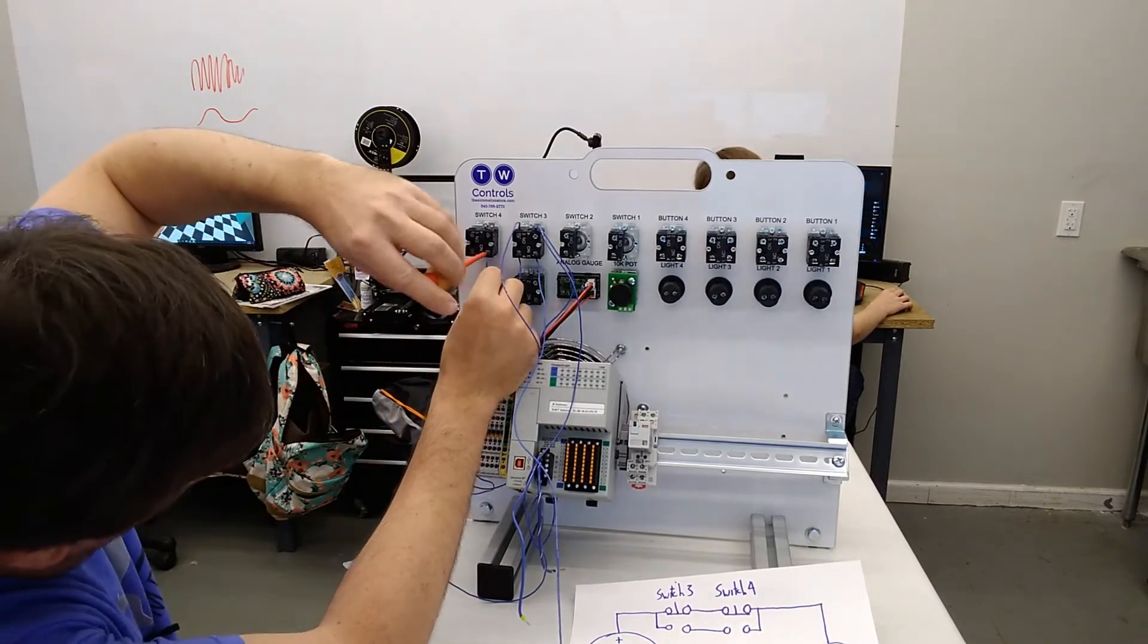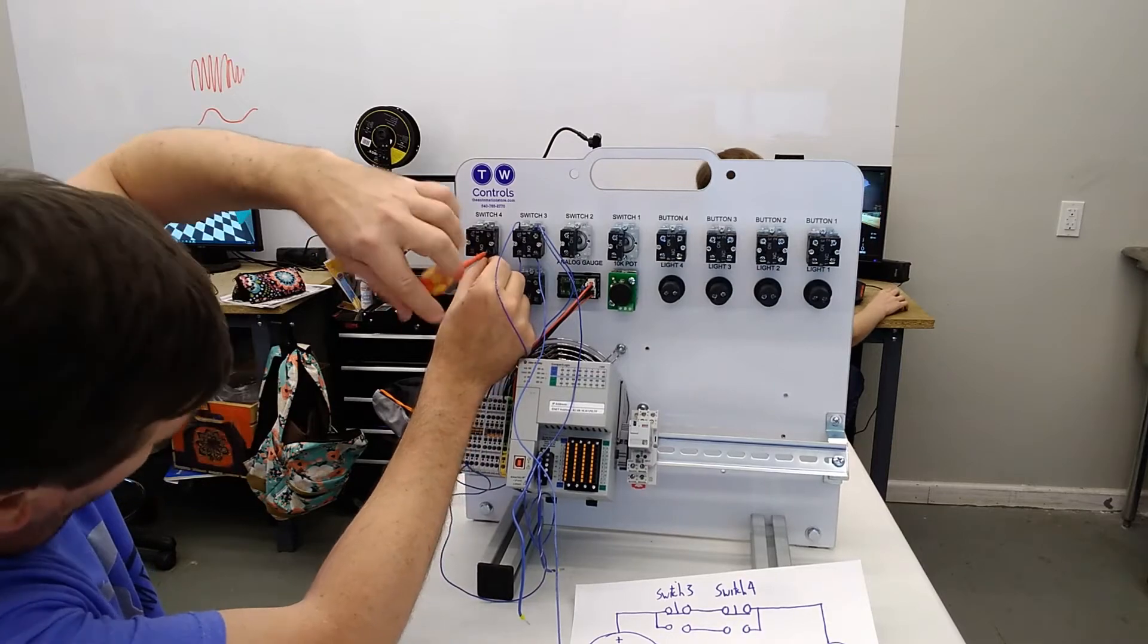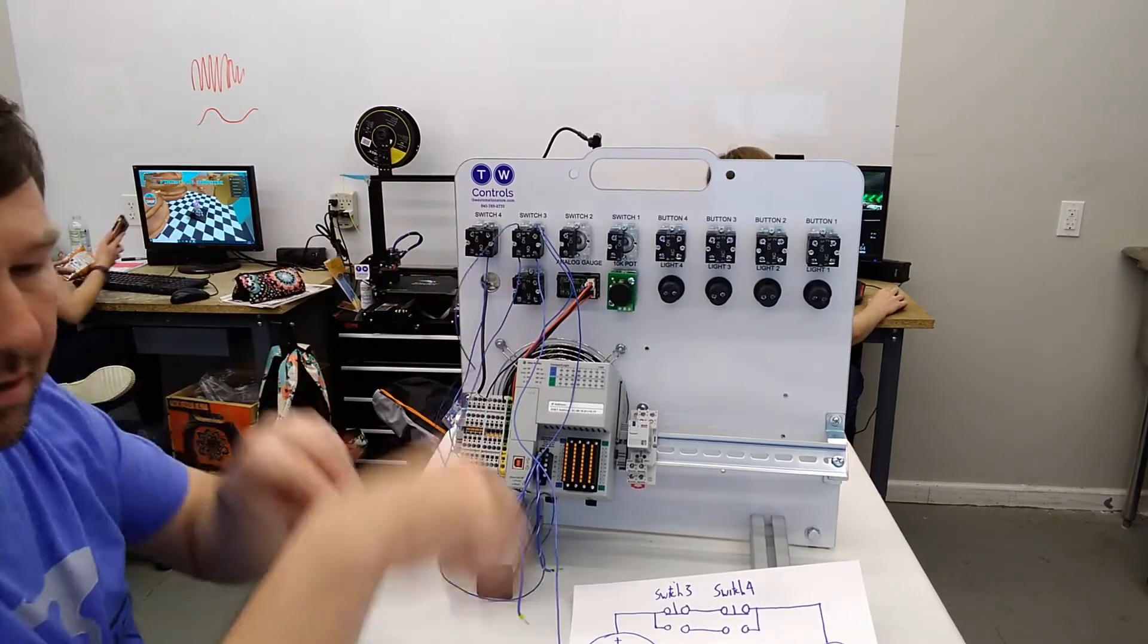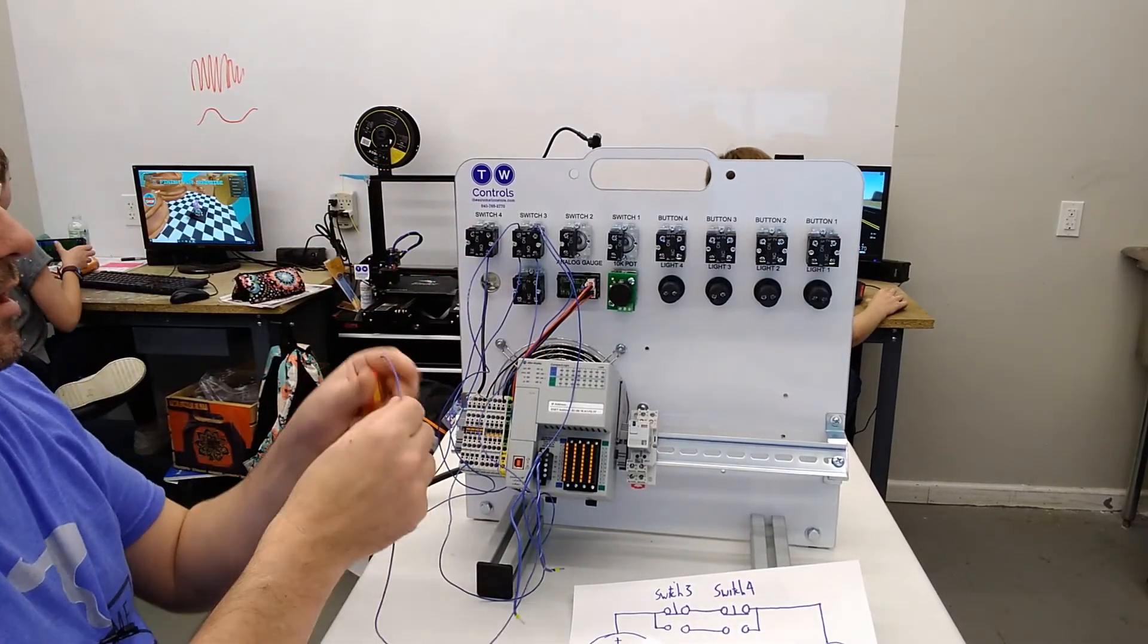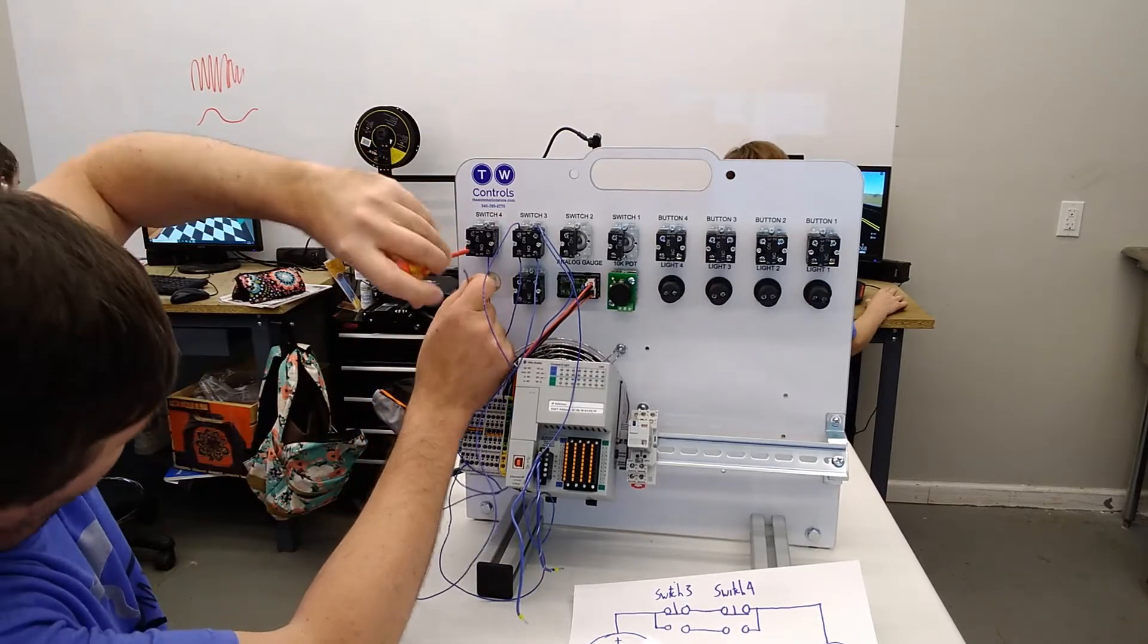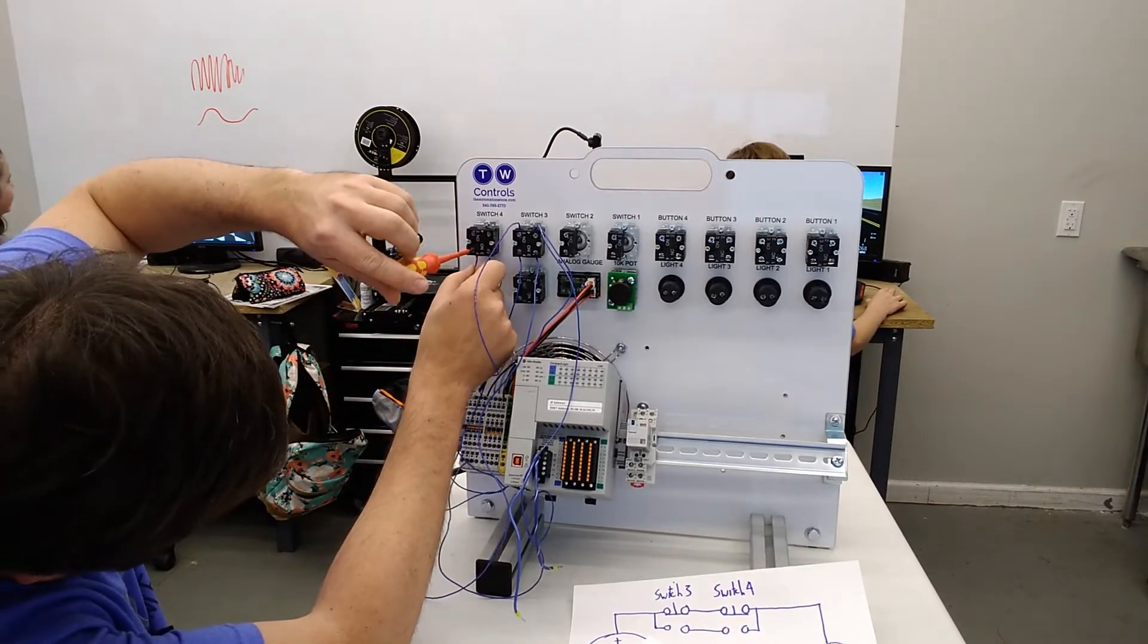Grab the other wire and connect it to the bottom of the other contact on switch four.